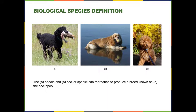If evolution creates a genetic shift within a species, and over time enough changes build up to create a whole new species, we need a definition of what a species is. The biological species definition states: two organisms belong to the same species if they can and will mate and produce a fertile and viable offspring. Viable means it survives and can also reproduce.